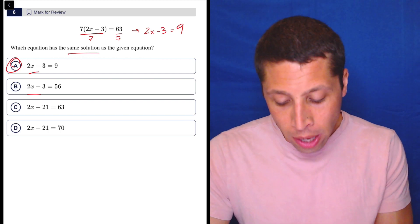Now the reason it has the same solutions is if we continued the process of solving this, we would get the same value of x. So 2x minus 3 equals 9. So what would you do? You'd add 3 to both sides. You'd get 2x is equal to 12. You'd divide by 2. You'd get x is equal to 6. So cool.